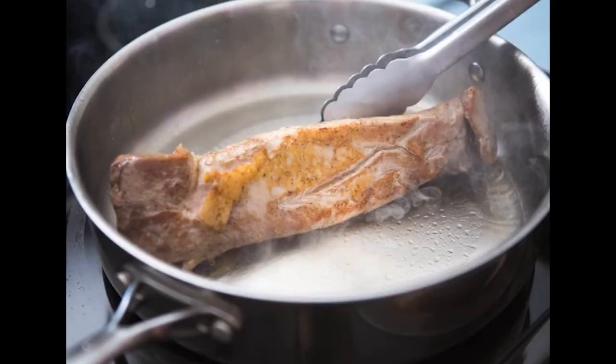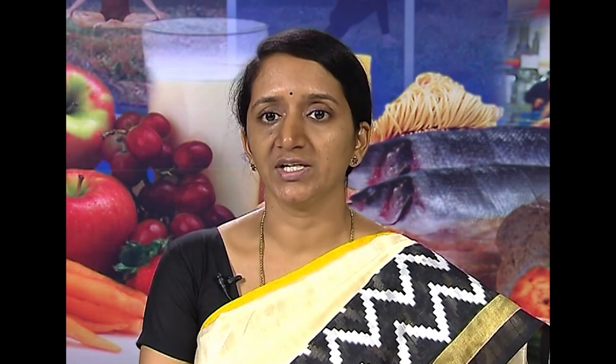Intermediate moisture meat products mostly depend on lower moisture content and decreased water activity for their shelf life. Use of high concentration of humectants including salt and sugar for desorption usually produces a disagreeable taste. Leistner and Rödel in 1976 coined the term hurdles for parameters like chilling, heating, pH reduction, low water activity, enhanced pH, use of preservatives, and competitive microflora. Use of these hurdles or combination of preservation techniques in a balanced and judicious manner was named hurdle concept and later hurdle technology. It usually does not allow a single parameter to drastically affect the product characteristics.